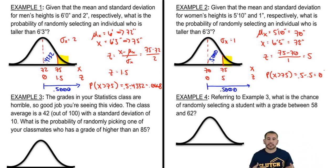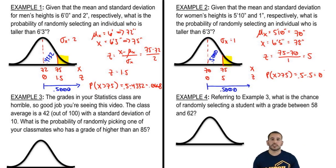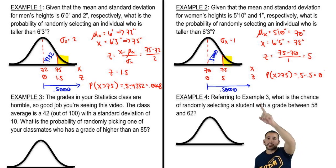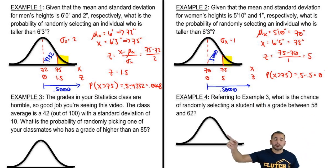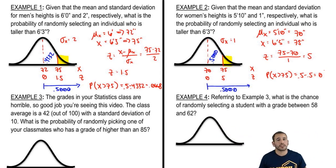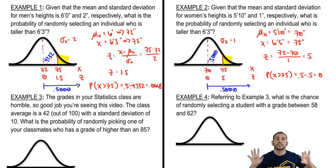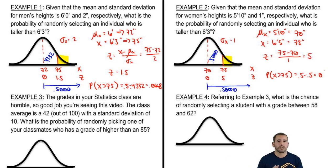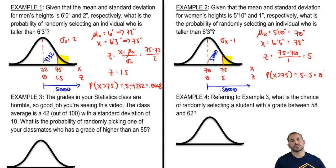We have a higher z-score for women because they are not only shorter on average but the data is less spread out. So it's a more extreme value — the probability of finding a woman who's 75 inches or taller is 0% versus a 6.68% chance for men. This brings together the concepts of probabilities, z-scores, extreme z-scores, and why distributions differ from each other.